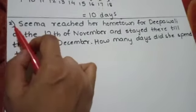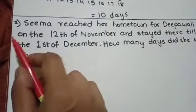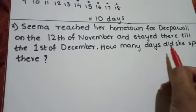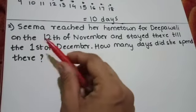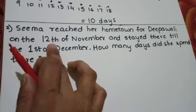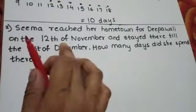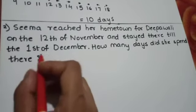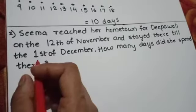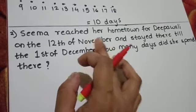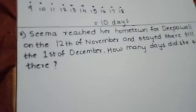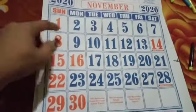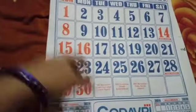Now let us see the second one. Seema reached her hometown for Diwali on the 12th of November and stayed there till the 1st of December. How many days did she spend there? November month has how many days total? 30 days are there in the month of November.